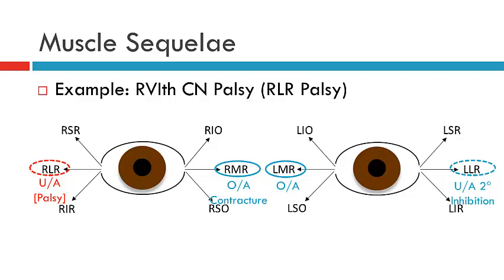That is overall the muscle sequelae. It's important to note that when a patient recently acquires a muscle palsy, you may not see all four components of the muscle sequelae. Most often, what will be noted first is the underaction of the palsied muscle and the overaction of the contralateral synergist. The other elements may present later in time or be clinically observable later. You do not need to see all overactions and underactions to conclude that a patient has a neurogenic palsy.